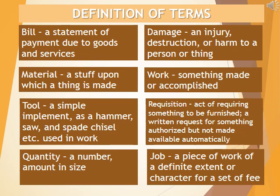Definition of Terms: Bill – a statement of payment due for goods and services. Material – a substance upon which a thing is made. Tool – a simple implement such as a hammer, saw, spade, chisel, and others, used in work. Quantity – a number or amount in size. Damage – an injury, destruction, or harm to a person or thing. Work – something made or accomplished.